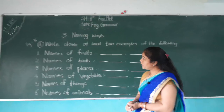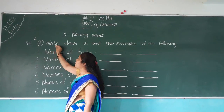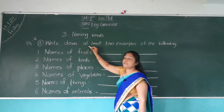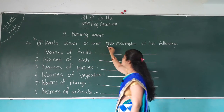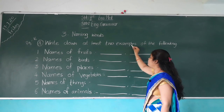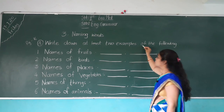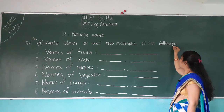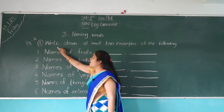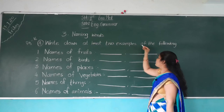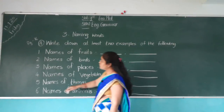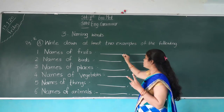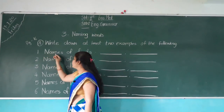Exercise number A. Read it. Write down at least two examples of the following. Here, given names of fruits. We have to write at least two fruit names. We have to write here. Number one: Names of fruits.